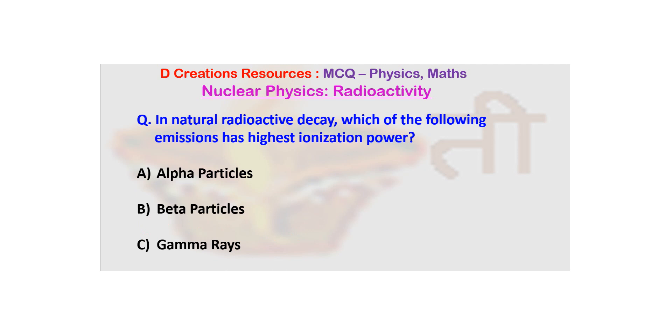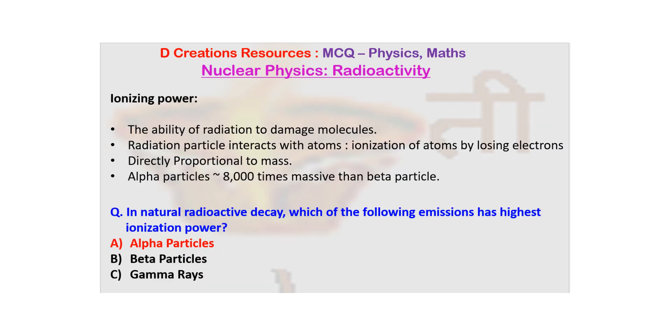Now what exactly is ionization power? Ionization power is the ability of radiation to damage molecules. And how do they damage the molecules? Well, the radiation particle is going to interact with atoms and the atoms will lose electrons due to this interaction and in turn get ionized. That is why we say ionizing power.